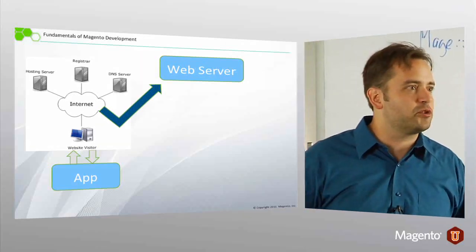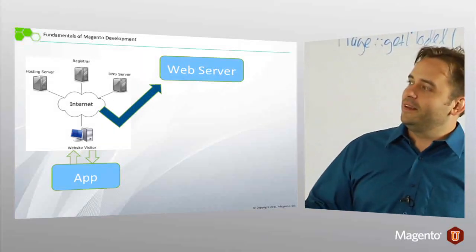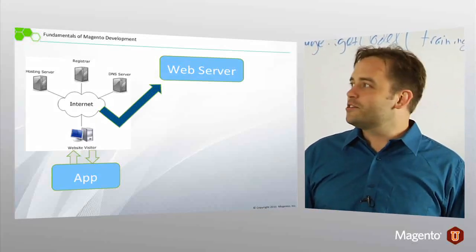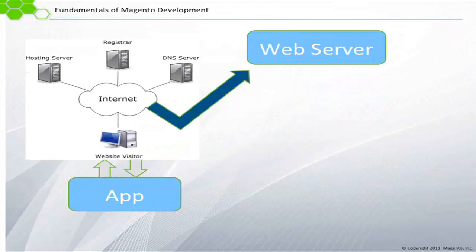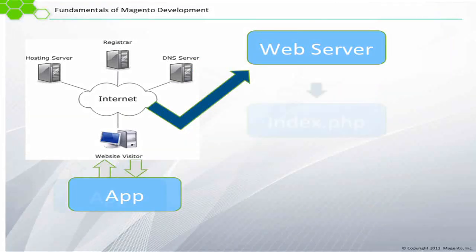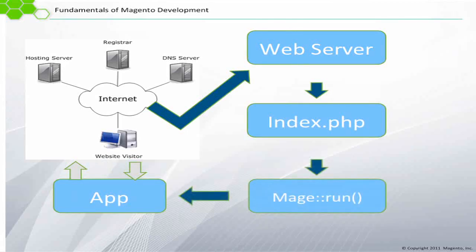We're aware of this thing called the internet. The internet is not yet in the cloud, but I'm sure it will be. You'll have your hosting server and register on a DNS server. These are all the things that get a person to the website. At the web server, the request hits the web server. The request is routed to index.php. Mage Run is called. Mage Run initializes the app via Mage App Run.